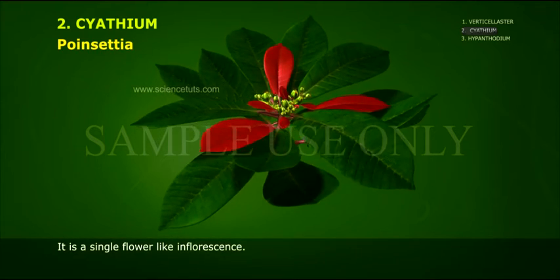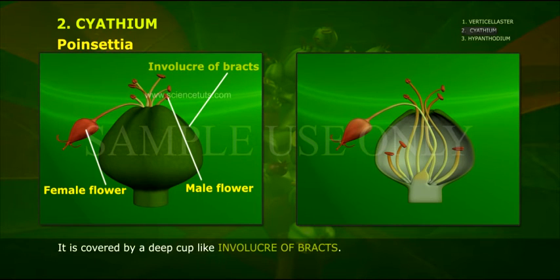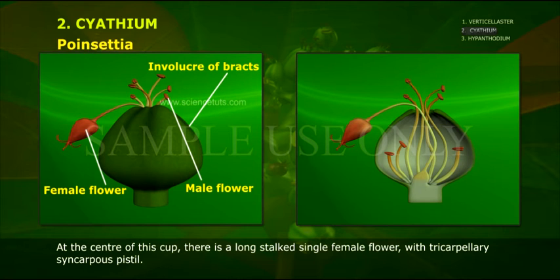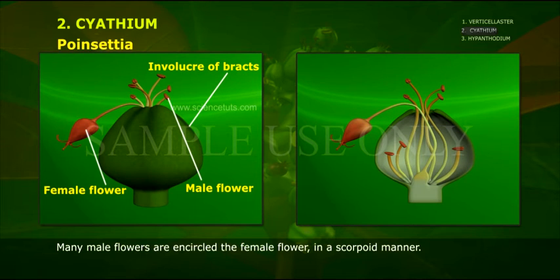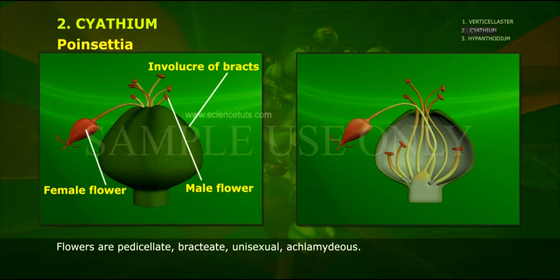Cyathium is found in the family Euphorbiaceae. It is covered by a deep cup-like involucre of bracts. On the outer surface of the deep cup, nectary glands are present. At the centre of this cup, there is a long-stalked single female flower with a tricarpellary syncarpous pistil. Many male flowers encircle the female flower in a scorpioid manner. Each male flower is represented by a single stamen. Flowers are pedicellate, bracteate, unisexual, and achlamydeous.